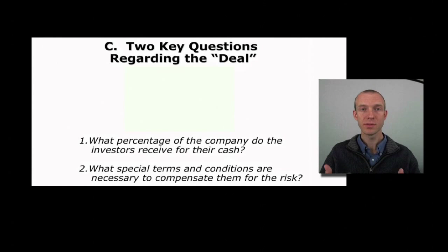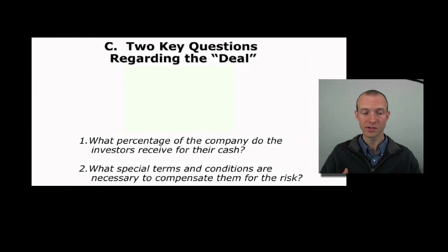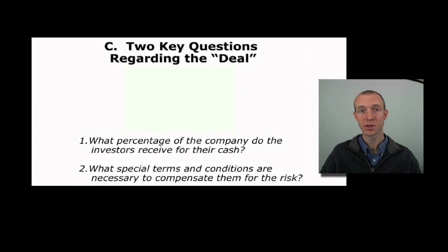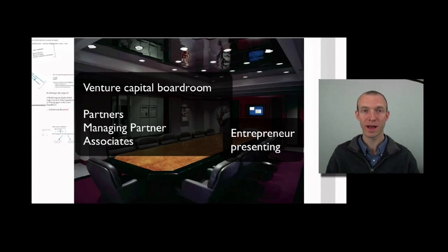I'm going to be going over this fairly quickly, so I encourage you to take a look at some of the recommended readings on the website for more detailed information if you're interested in delving deeper into this topic. The two key questions you want to have in mind as the entrepreneur going into the deal are: what percentage of the company do the investors receive for their cash, and besides this percentage of ownership, what are the special terms and conditions necessary to compensate them for the risks they're taking? Here we are back in our venture capitalist boardroom to think about what's going through the VC partners' heads in terms of venture finance.